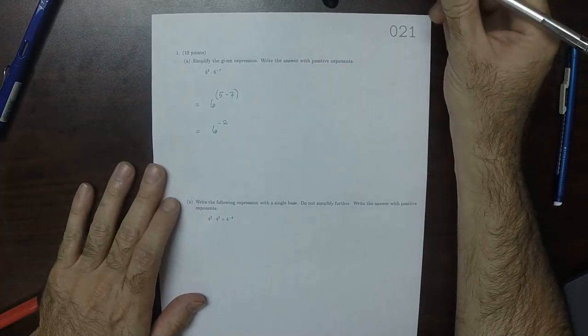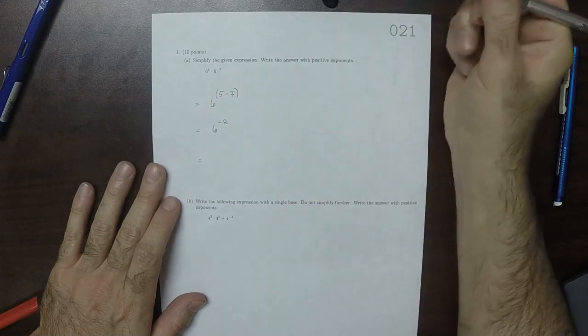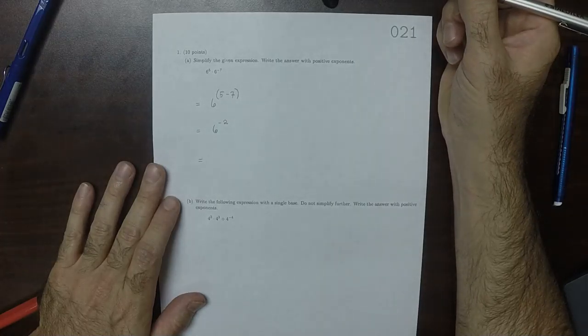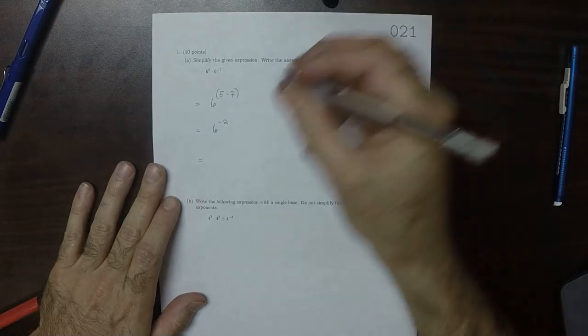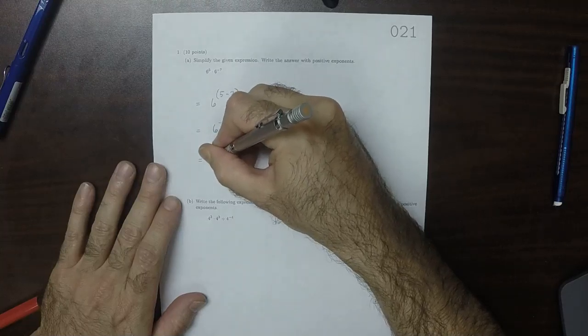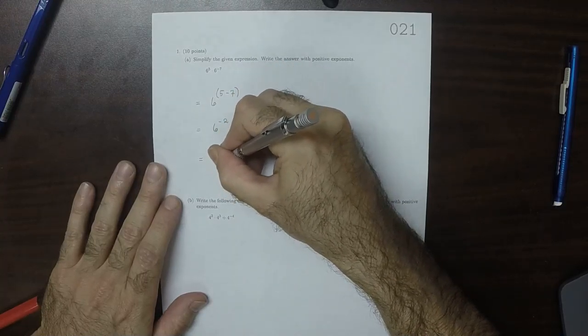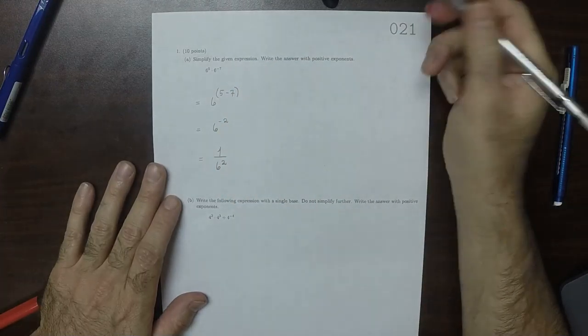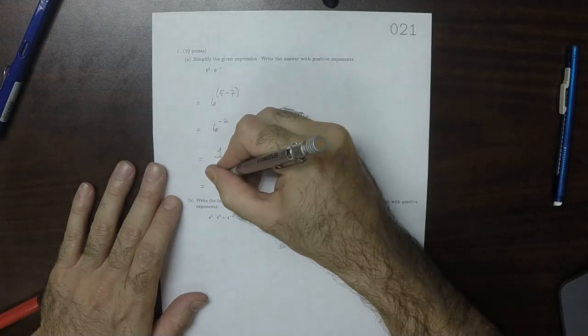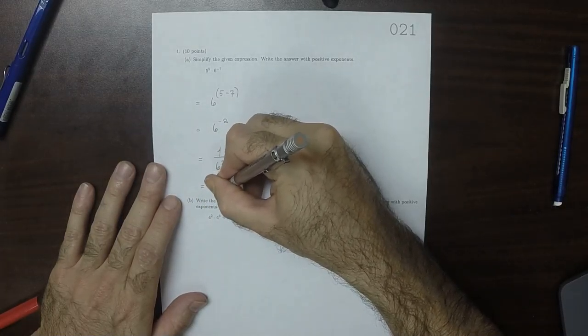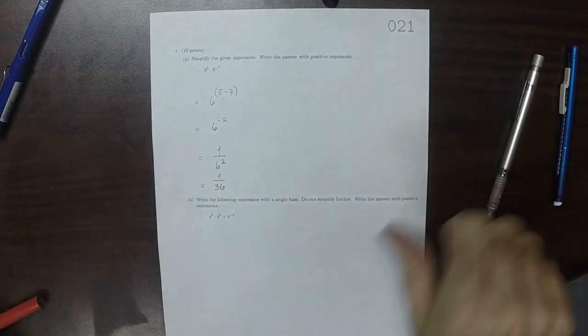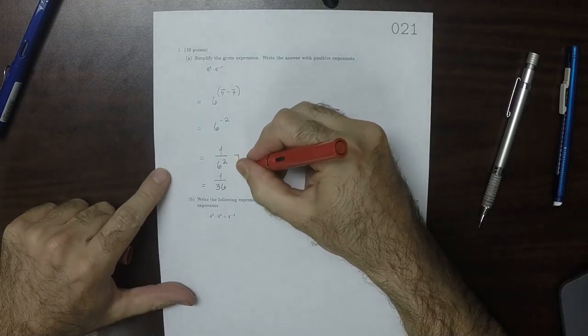And then it says, write your answer with positive exponents. Well, that is 1 over 6 squared, which you could write as 1 over 36. Either of these would be fine.